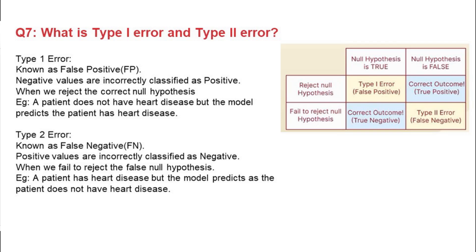Next question: what is Type 1 error and Type 2 error? Whenever this question is asked, explain it using a confusion matrix. Type 1 error is false positive — the actual value is negative but it is incorrectly classified as positive. This occurs when we reject the correct null hypothesis. For example, a patient does not have heart disease but the model predicts the patient has heart disease. That is false positive — Type 1 error.